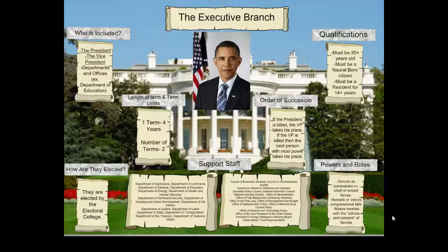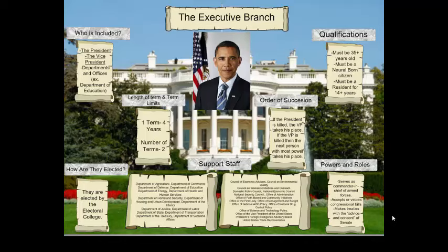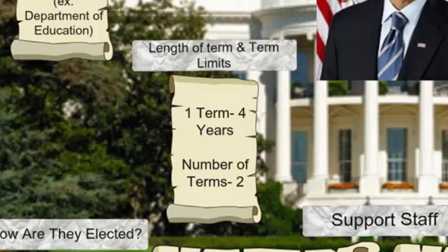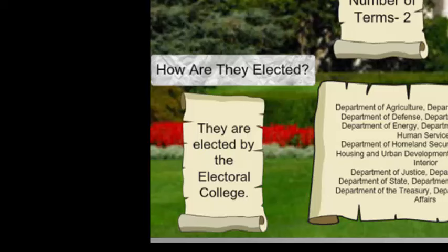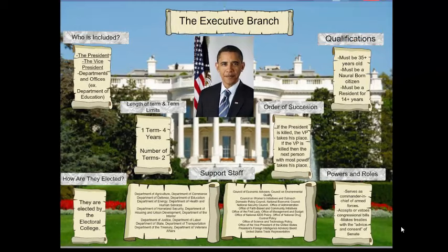Here is a great overview slide of the Executive Branch. The President is the head of the Executive Branch. The term for the President — how long they serve — is four years, and they can serve a maximum of two terms. The qualifications to become President are that they must be 35 years old, live in the country as a resident for 14 years, and be a natural born citizen. They are elected through a system known as the Electoral College, which will be the focus of our next video.